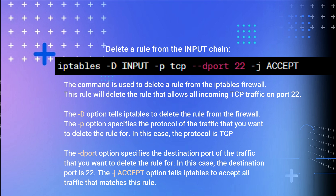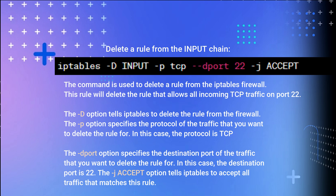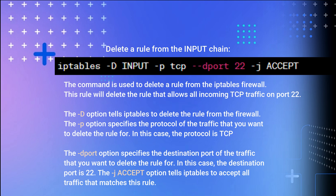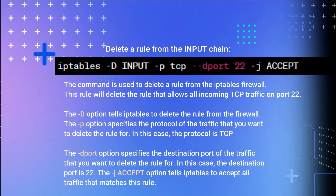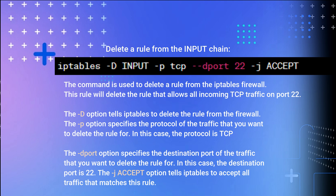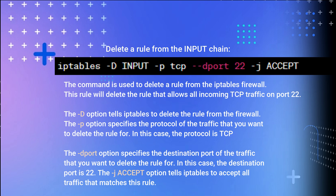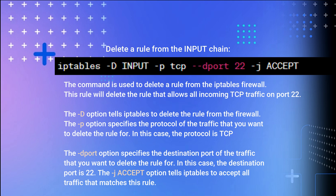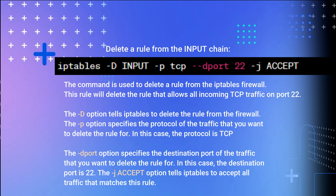Delete a rule from the input chain. This command is used to delete the rule that allows all incoming TCP traffic on port 22. The -D option tells IP Tables to delete the rule from the firewall. The -p option specifies the protocol, in this case TCP. The --dport option specifies the destination port, in this case 22. The -j ACCEPT option identifies the matching rule to delete.